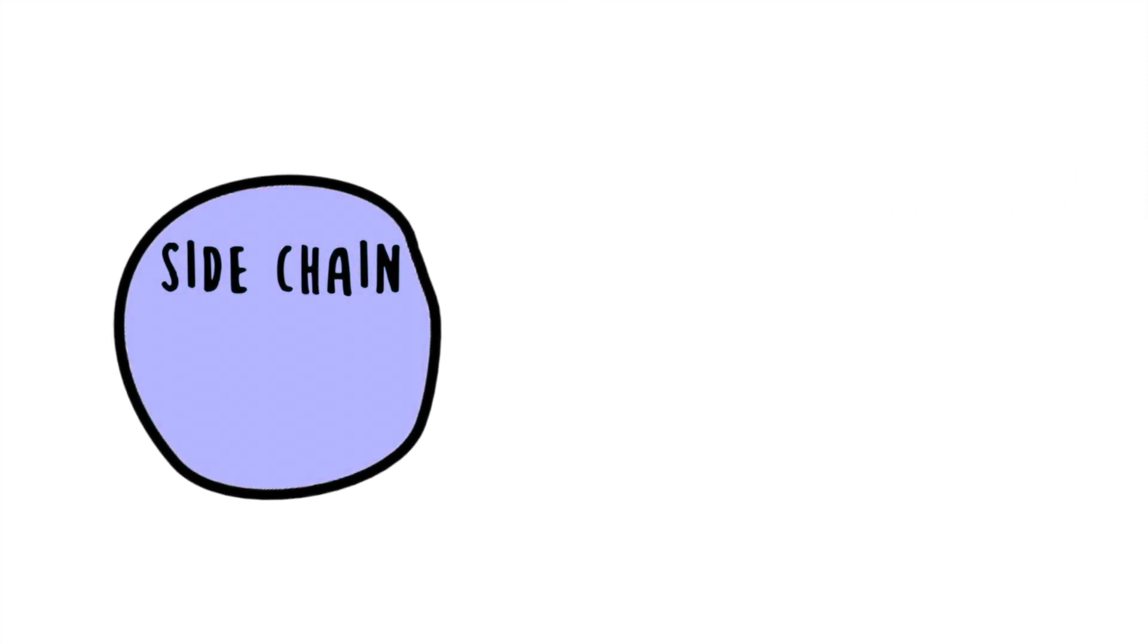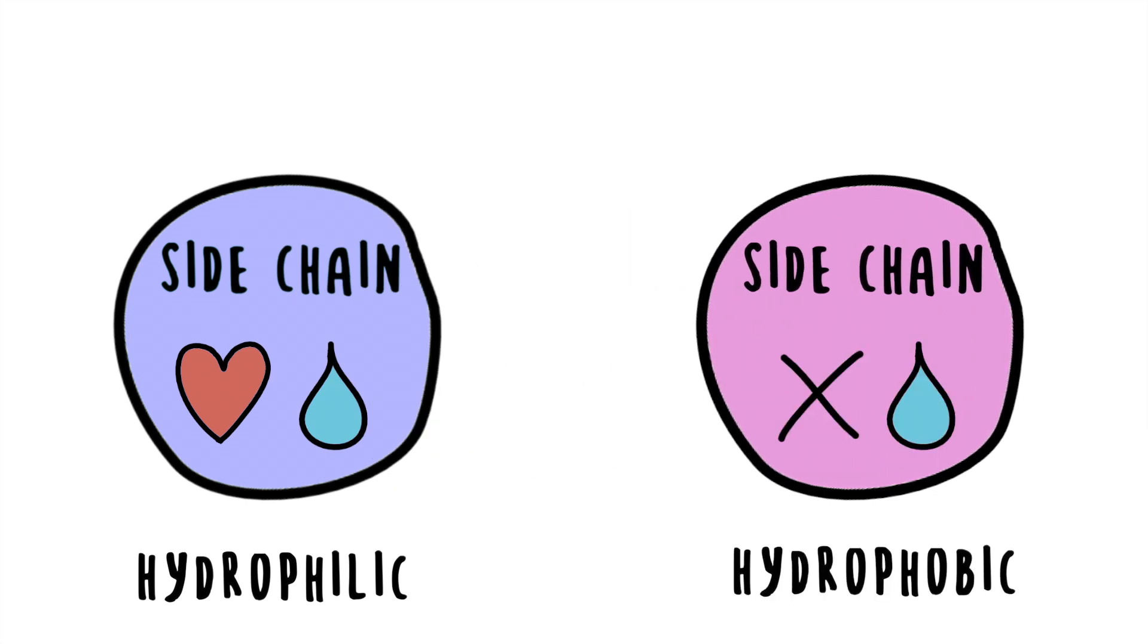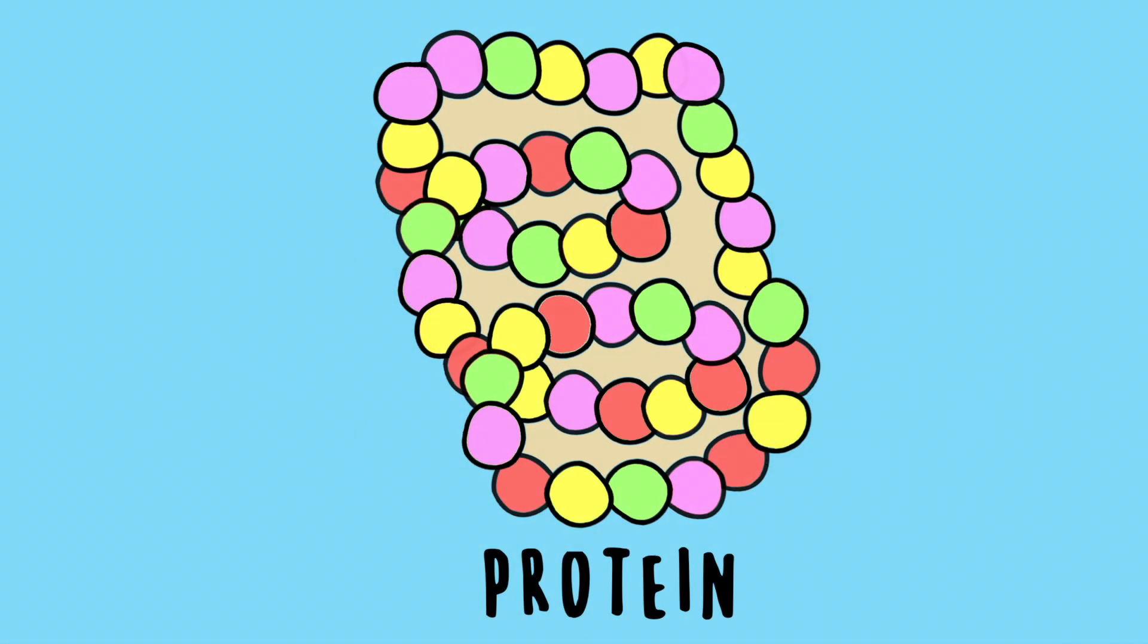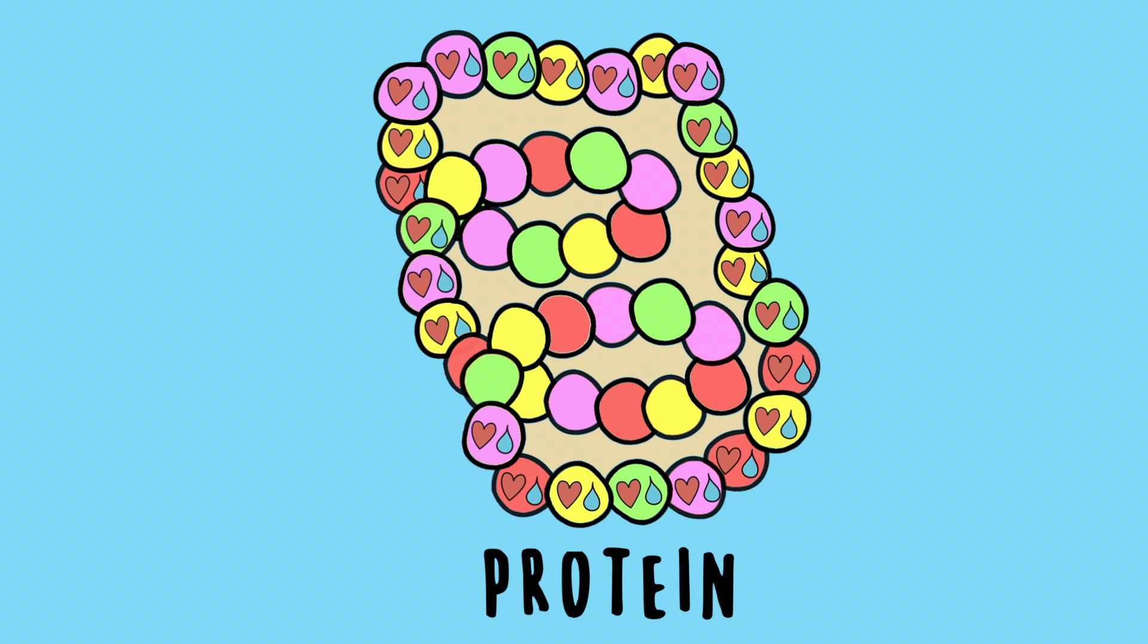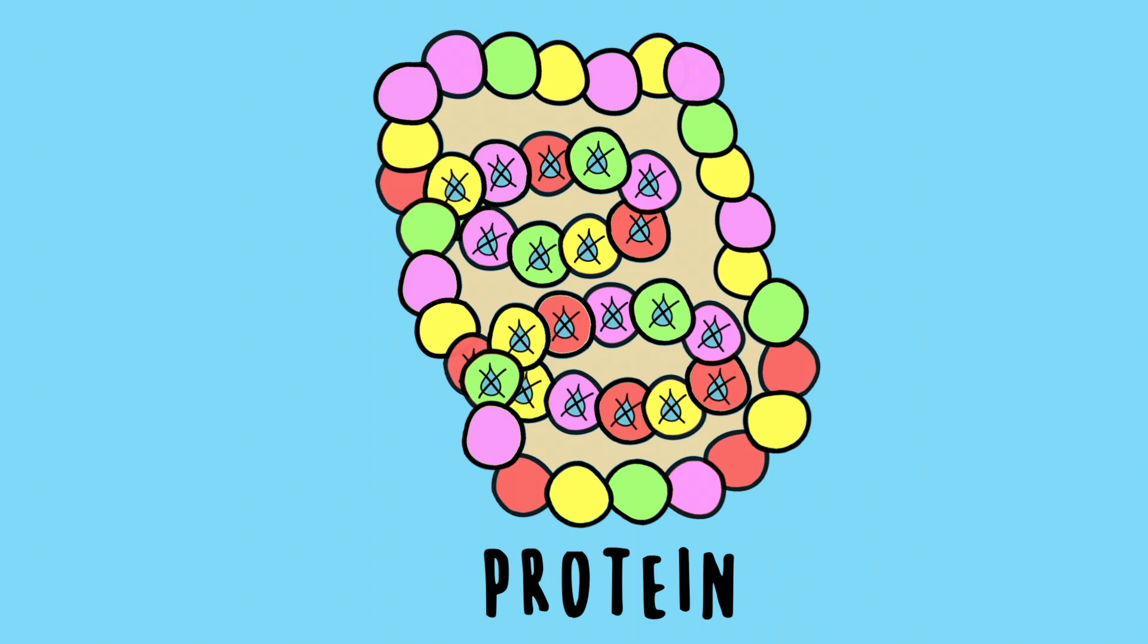The various side chain interactions influence how the protein structures itself. For example, some side chains are hydrophilic, so they like water, while some are hydrophobic, so they don't like water. The amino acids with hydrophilic side chains will be on the exterior side of the protein interacting with water, while the amino acids with hydrophobic side chains will sit in the interior of the protein, away from water.